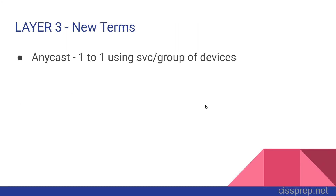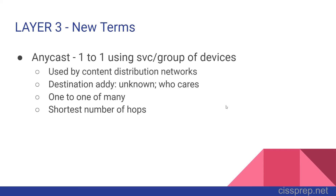Anycast is basically a one-to-one transmission that uses the services of a group of devices, also called a one-to-one-of-many. Content distribution networks use Anycast to push a continuous flow of content to regional sub-distribution servers. The destination address doesn't matter — the sending node just wants somebody in its Anycast group to receive the message. The recipient could be the closest node, the one with the shortest number of hops, or the one on a network path with less traffic than the others in the Anycast group.